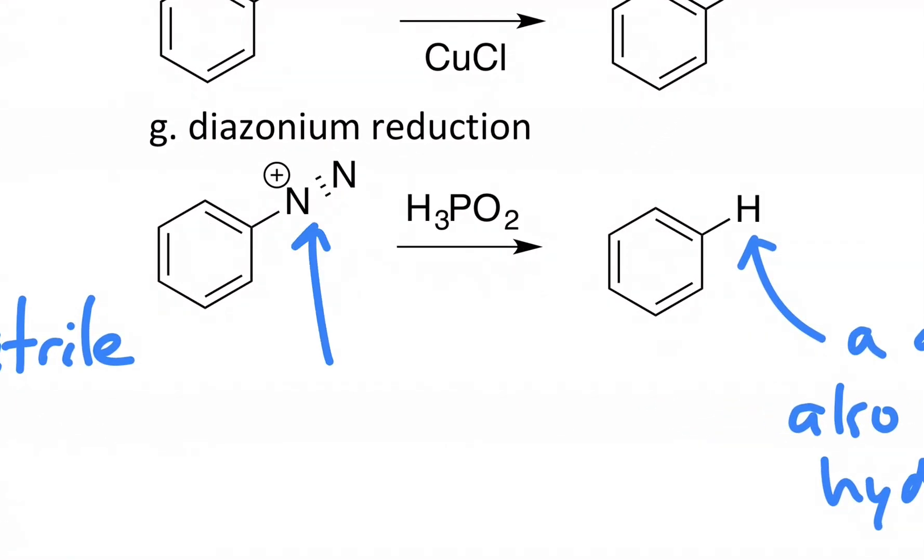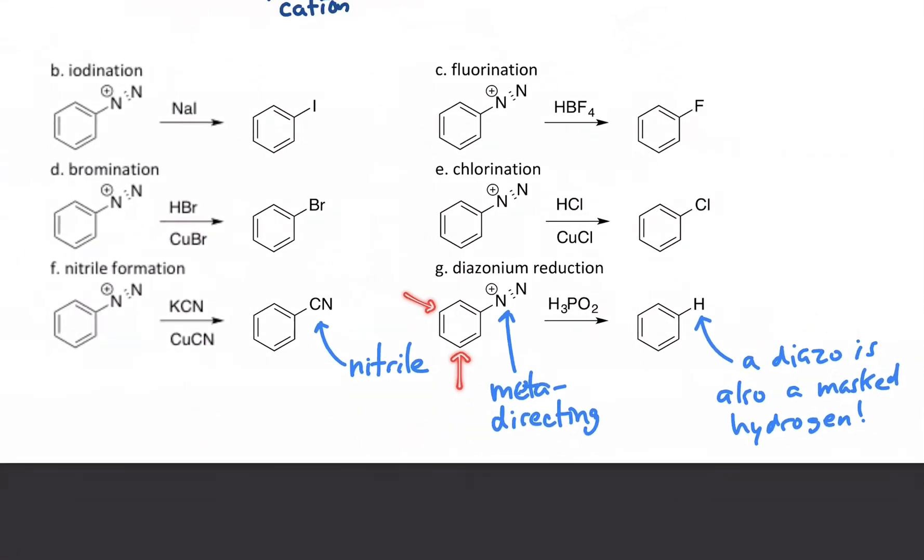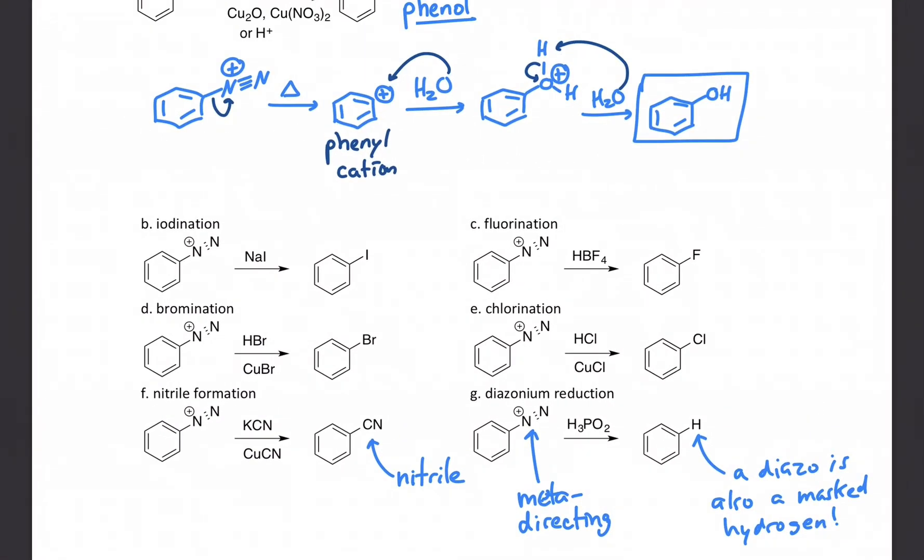Remember from the previous lesson, the diazo group is meta-directing. So if we were to use this particular molecule and do substitutions elsewhere on the ring, it would want to go in one of the meta positions relative to the diazo if it's doing a traditional electrophilic aromatic substitution. So that's how we make a diazonium, and that's how we do substitutions with it. We'll see you in the next one.